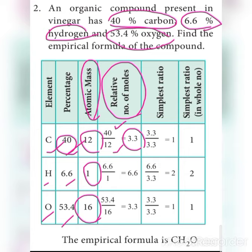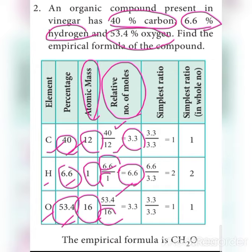For hydrogen: 6.6 divided by the atomic mass of 1 equals 6.6. For oxygen: 53.4 divided by the atomic mass of 16 equals 3.3. The number of moles for each element is now calculated.